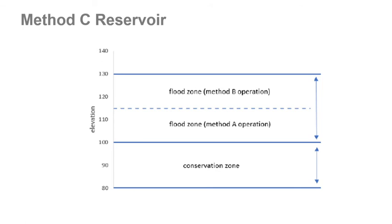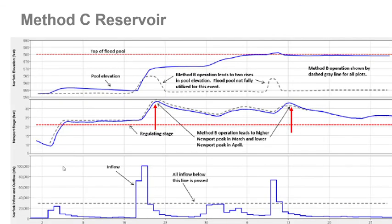That's where the Method C reservoir comes in — it's really just a combination of Method A and Method B. In the lower part of your flood zone you operate as a Method A reservoir, but once you reach a certain pool level you become more aggressive with releases and switch over to Method B. Whether you get a better result this way is still event dependent.